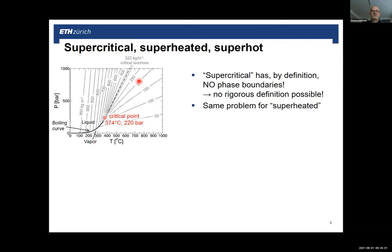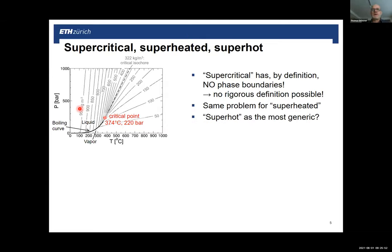Similarly, the term superheated is problematic. Consider the isochore at 0.1 g/cm³, equivalent to steam coexisting with liquid at 350 degrees C on the boiling curve. If you move along this isochore with increasing temperature you will exceed the critical pressure, entering a range where you can go from vapor to liquid without crossing any phase boundary. Calling this superheated steam or vapor is equally arbitrary.